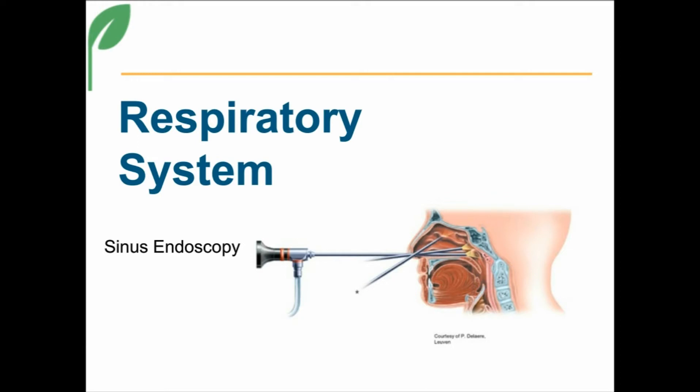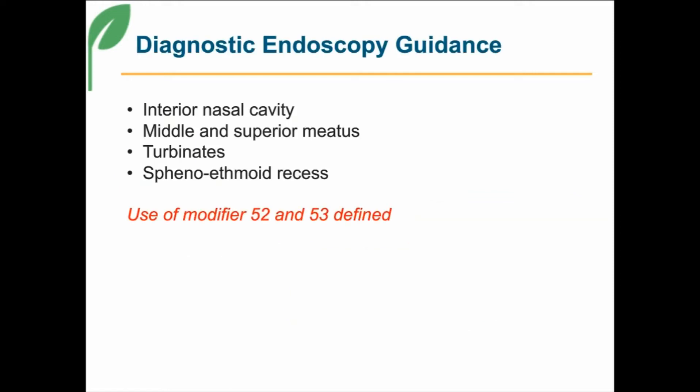Remember the endoscopy — there's anatomy, and I think I have a picture later on. The first cleanup happened in the paragraph before the four diagnostic endoscopy codes. It provides guidance about what's included in a diagnostic nasal endoscopy, listed in the bulleted section of the slide. What's been added this year is guidance on what happens if the doctor doesn't look at all four of those particular cavities. The guidance given is to use modifiers.